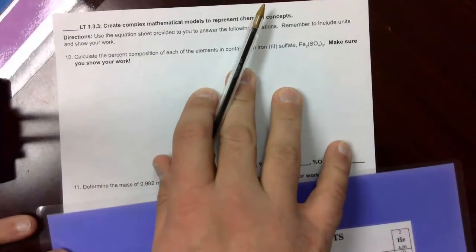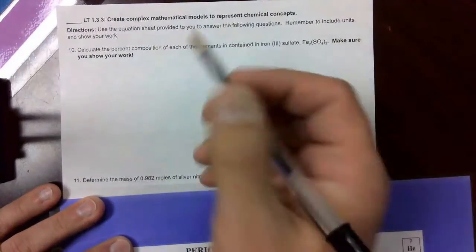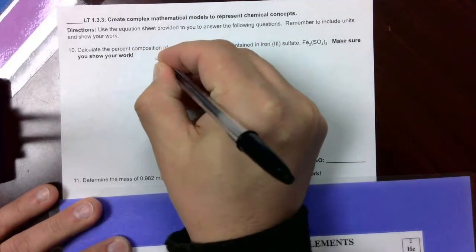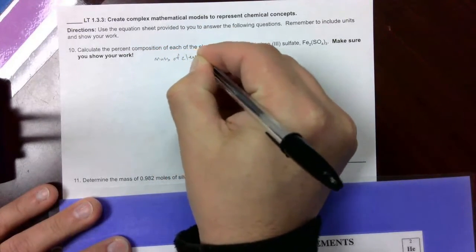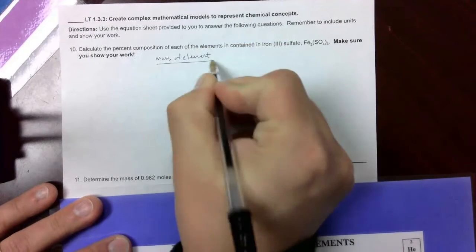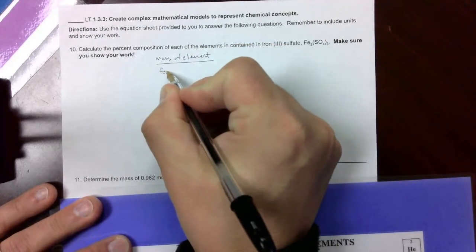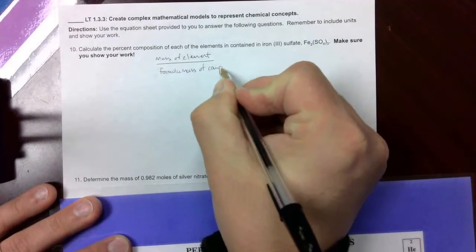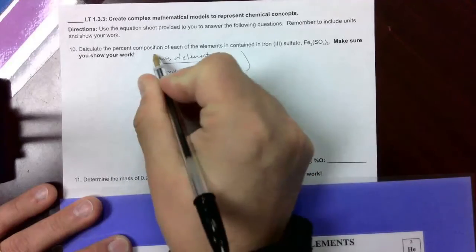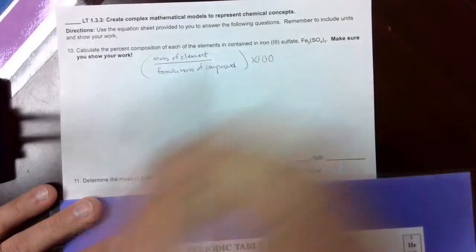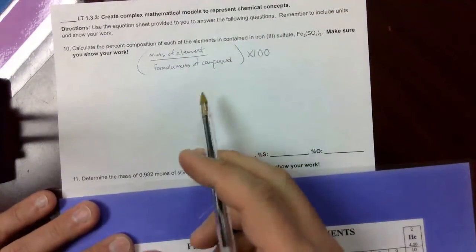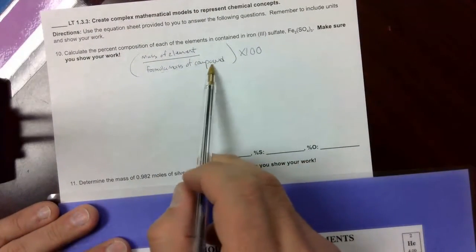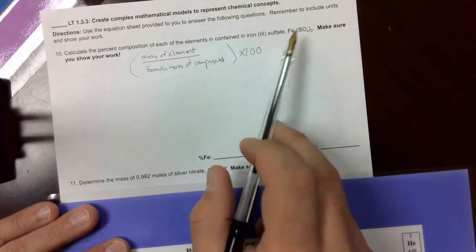So the percent composition means we need to follow the percent composition formula. So we need the mass of the element divided by the formula mass of the compound. And that's going to get multiplied by 100 to find the percent composition of each of these three elements. So the first thing we have to do is figure out the formula mass of the compound. And we're going to do that based on this formula.